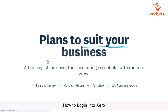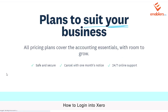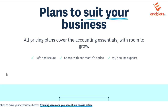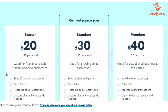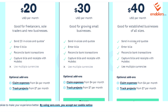Here are some plans that are available. We can start from $20 per month, which is the Starter plan. This is the Standard plan which starts at $30, and this is the Premium at $40 per month.